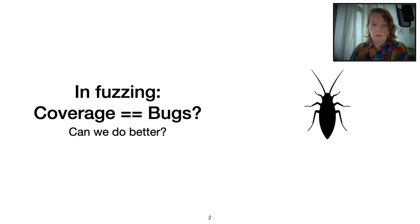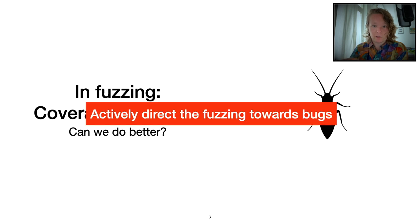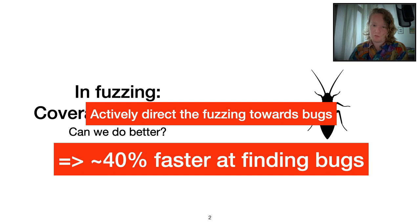In fuzzing, the general notion is that more coverage implies more bugs. But can we do better than that? Well, turns out by actively targeting actual bugs, we're able to trigger bugs 40% faster.